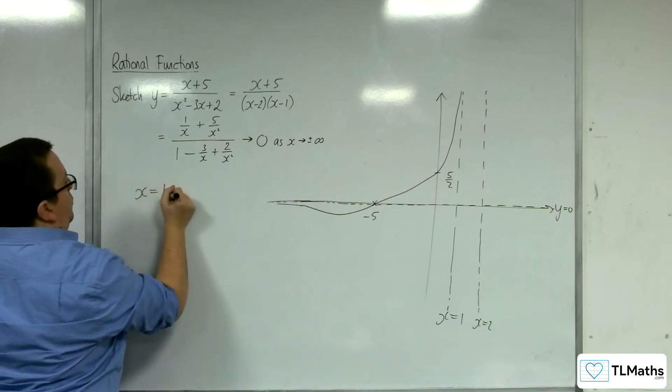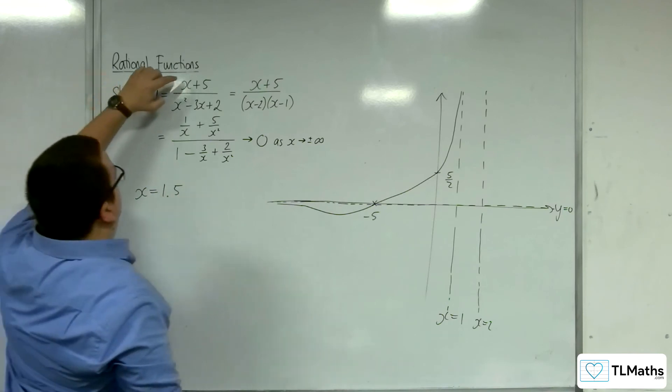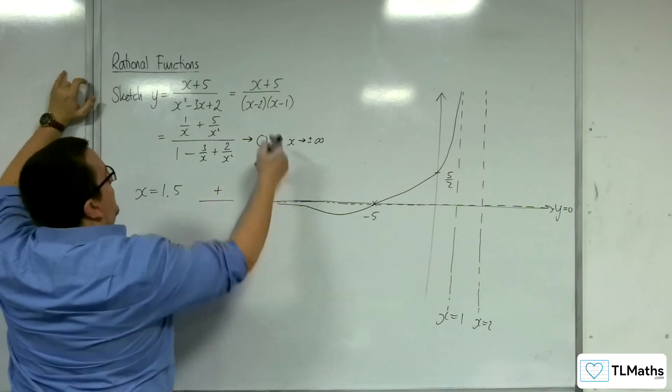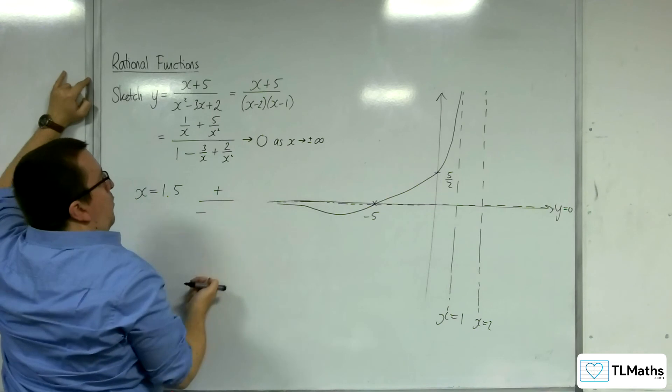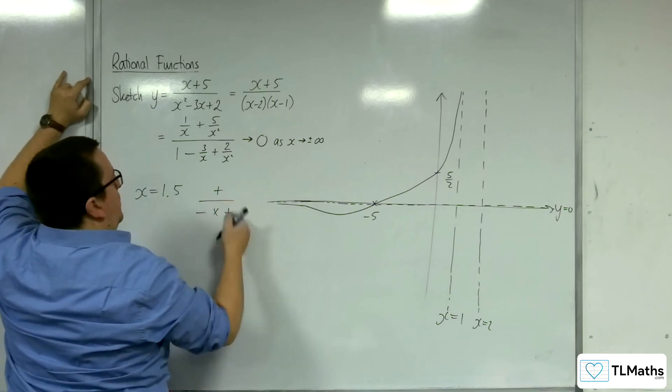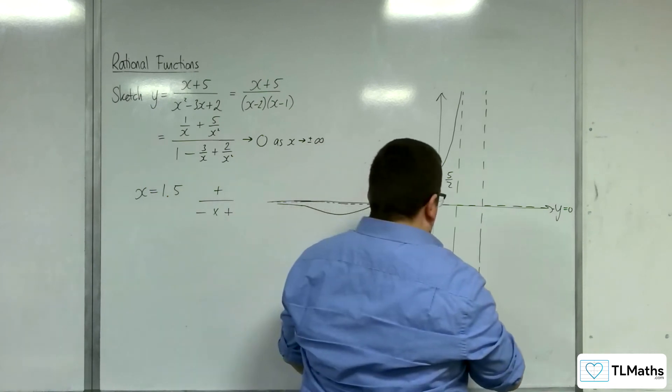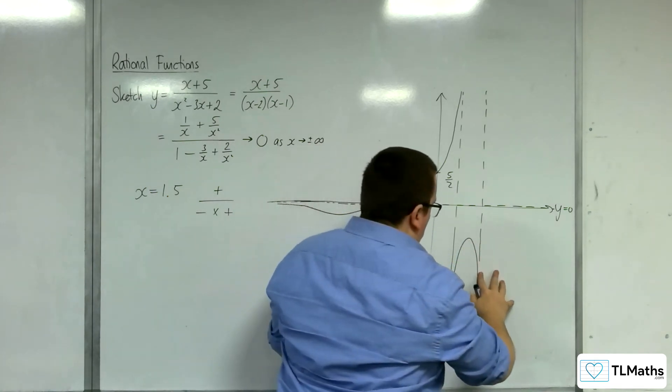So let's try x equals 1.5, see if it's positive or negative. So in the numerator, we've got 1.5 plus 5, so that's positive. In the denominator, 1.5 take away 2 is negative, 1.5 take away 1 is positive. So we've got positive over negative, which is negative. So that means we are down here for that part of the graph.